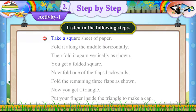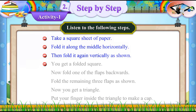Take a square sheet of paper. Fold it along the middle horizontally, then fold it again vertically as shown. You get a folded square.